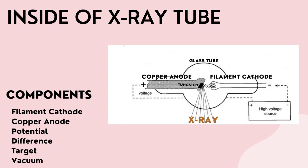The filament cathode is functioned to emit electrons. The copper anode is to hold the target. The potential difference across the tube is very high to ensure electron generation, while the target is the place where electrons will collide and produce x-rays. The tube is vacuumed to ensure that the accelerated electrons move without colliding with air molecules.